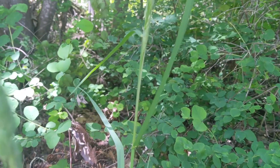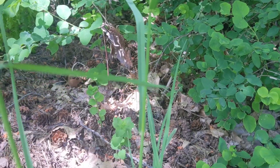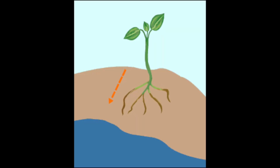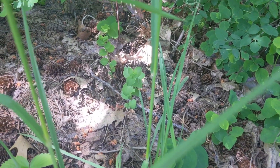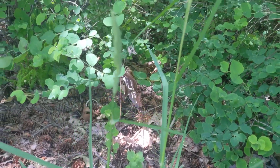Plants have three main parts to them: the leaves, the stem, and the roots. The roots stretch deep underground, which they use to pull water and nutrients from the soil. The water and nutrients are then transported up through the stem and into the leaves. The leaves absorb light and carbon dioxide through pores on the underside of the leaf called stomata. Carbon dioxide is the gas people and animals exhale every time they breathe.